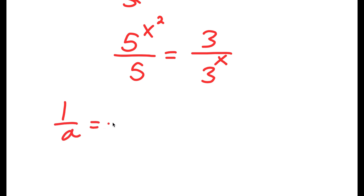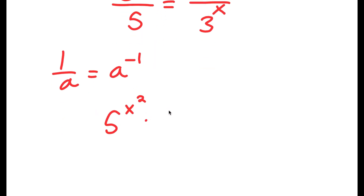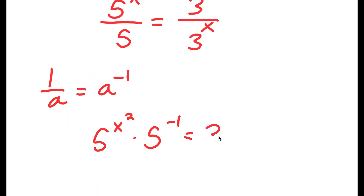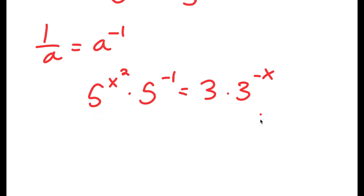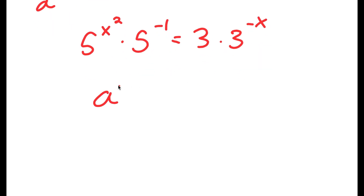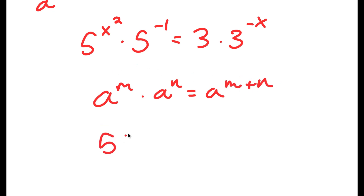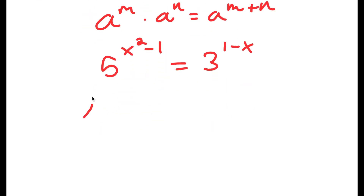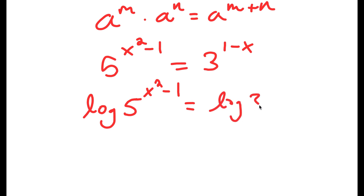Since 1 over a equals a to the power of negative 1, I can write 5 to the power of x squared over 5 as 5 to the power of x squared times 5 to the power of negative 1. This equals 3 times 3 to the power of negative x. Using the rule a to the power of m times a to the power of n equals a to the power of m plus n, I get 5 to the power of x squared minus 1 equals 3 to the power of 1 minus x. Taking the log of both sides gives log of 5 to the power of x squared minus 1 equals log of 3 to the power of 1 minus x.